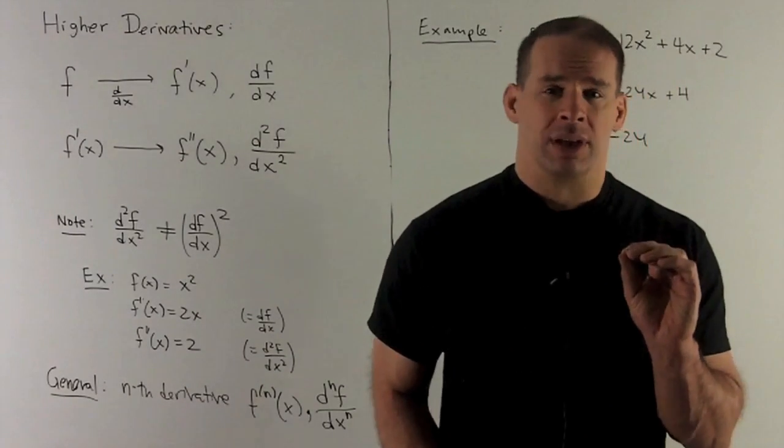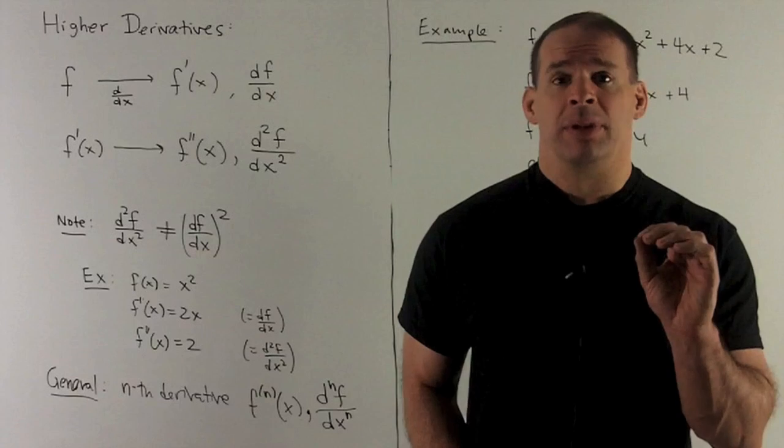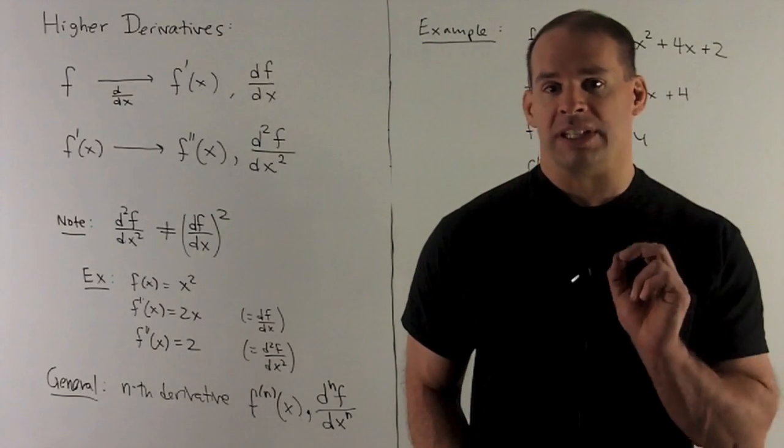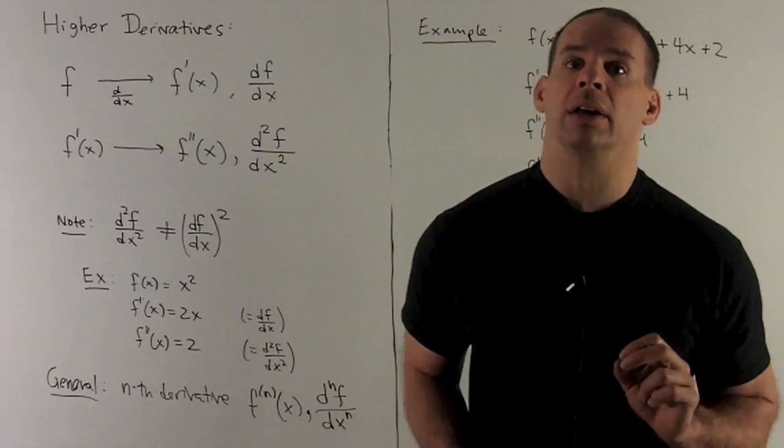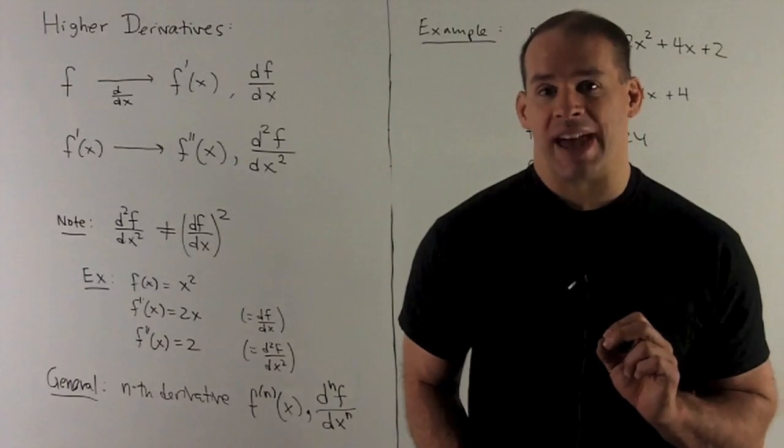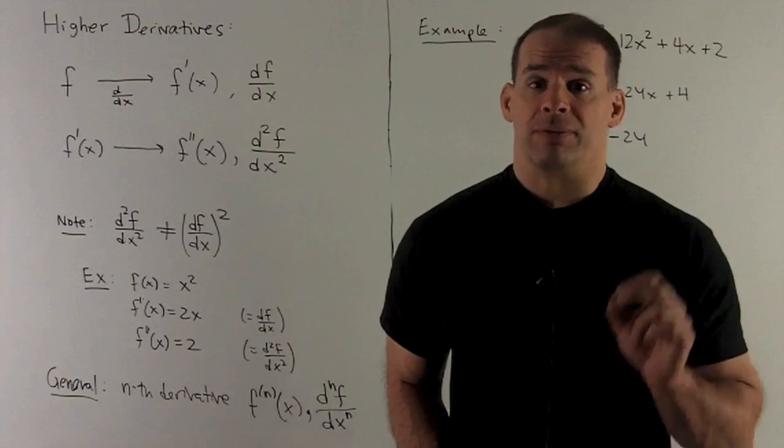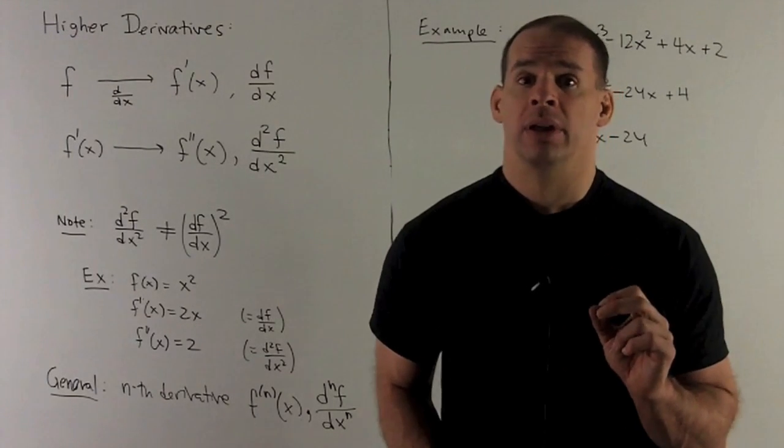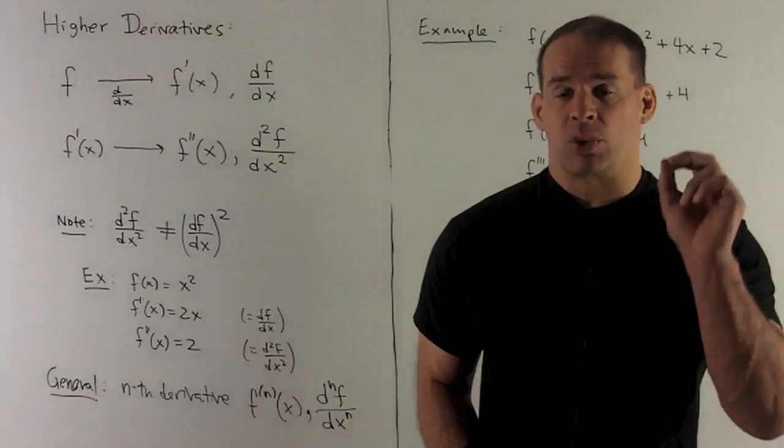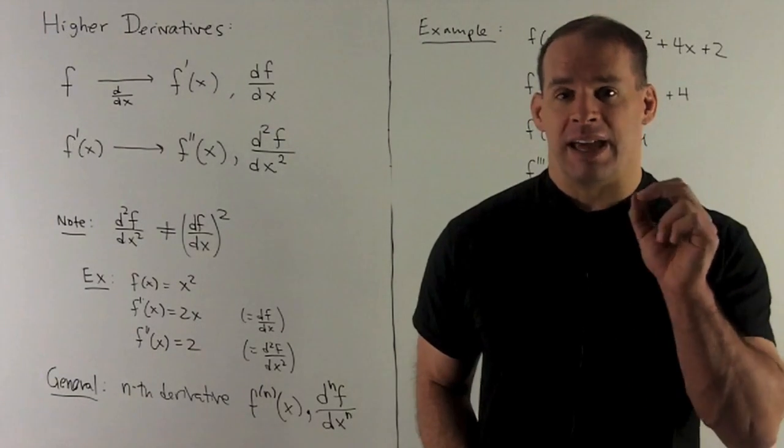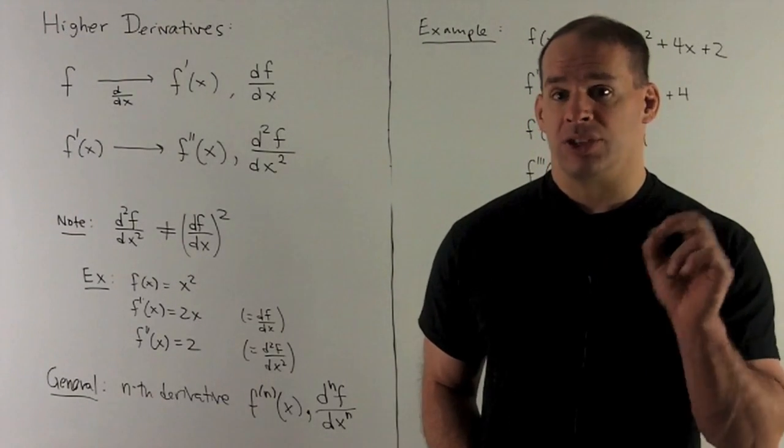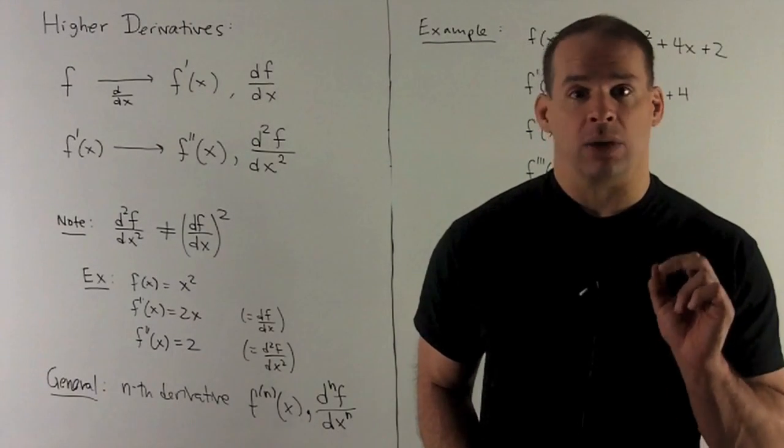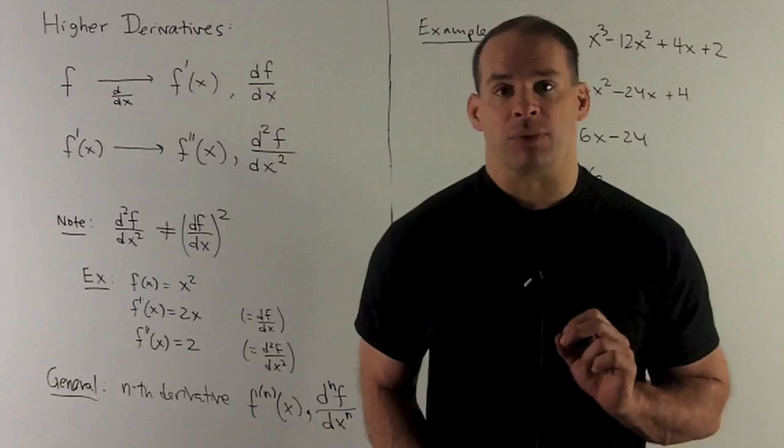Now you want to be careful with this because in the Leibniz notation, d squared of f over dx squared is not the same as df over dx quantity squared. So an example that shows that, just let f be equal to x squared. First derivative is 2x. Second derivative is 2. So d squared f over dx squared is 2. df dx quantity squared is 2x squared, which is 4x squared. So those two things are definitely not equal.